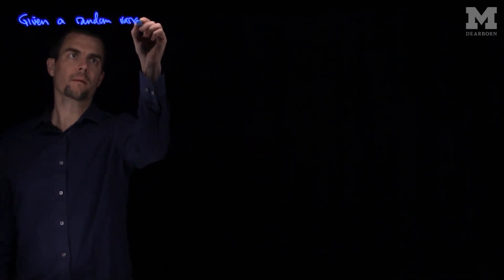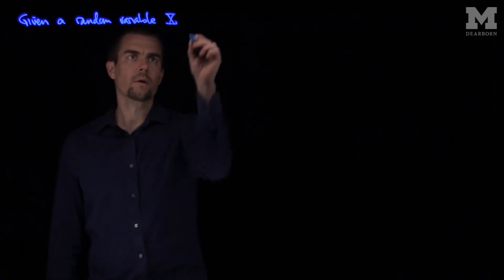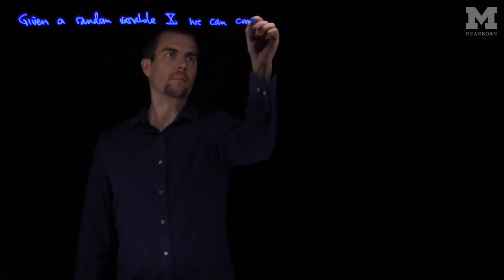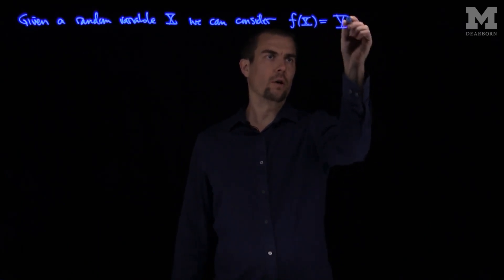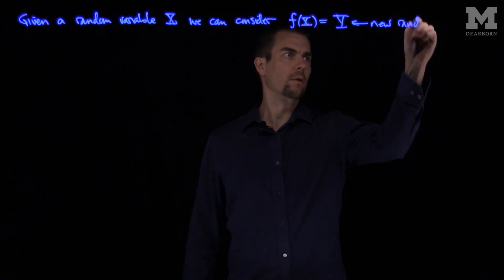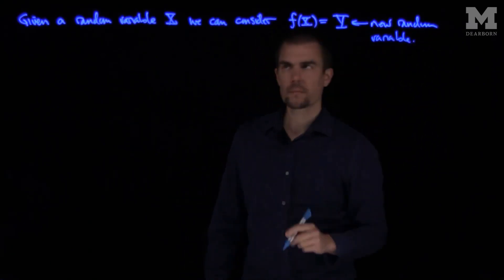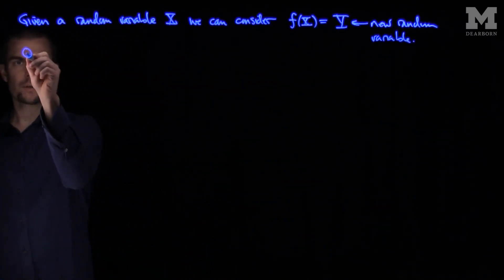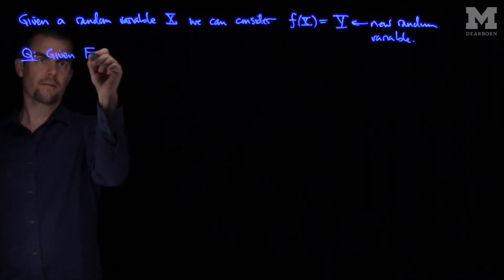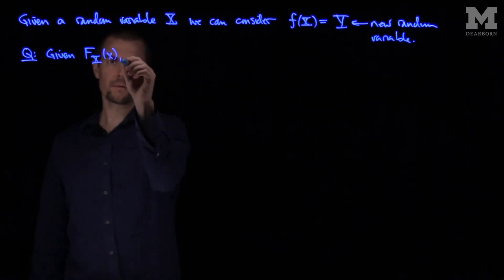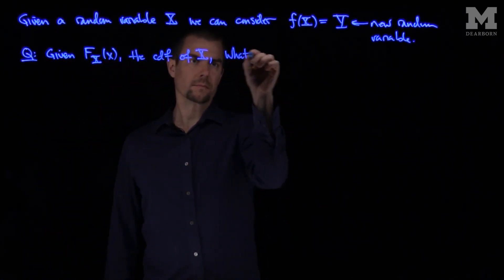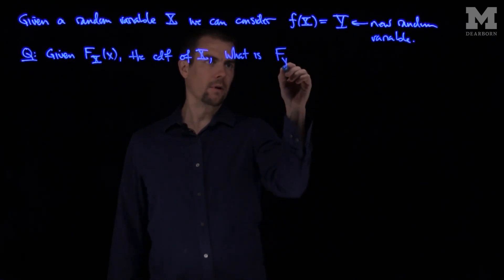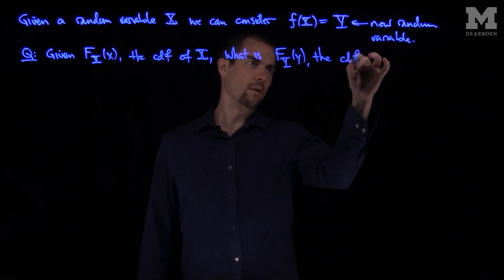If we're given a random variable X, we can consider a function f of the random variable X, and this will be a new random variable which we'll call Y. The question we'll have is: given F(X), the CDF of X, what is F(Y), the CDF of Y?